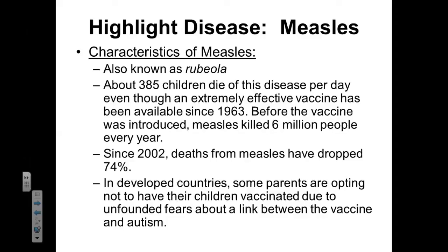That would be over 1,000 people every day dying from measles. Since the year 2002, deaths from measles have dropped off approximately 74%. This has primarily been attributed to developing countries that have had an increase in vaccination rates. This is contrasted with developed countries that have actually had a decrease in vaccination rates for measles, based primarily on an unfounded link that the vaccine for measles causes autism. It does not.